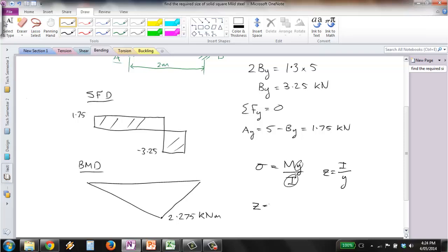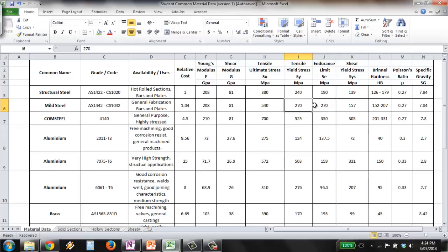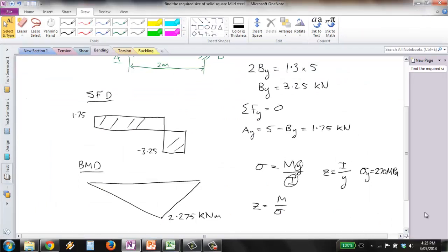We find that z is equal to the moment over stress. For mild steel we're using 270 megapascals from material tables. So for z we get, being careful of units here, 2.275 over 270 times 10 to the 6. Now I want this in millimeters cubed, so I multiply that by 1000 cubed, which gives me 8,425.9 millimeters cubed.